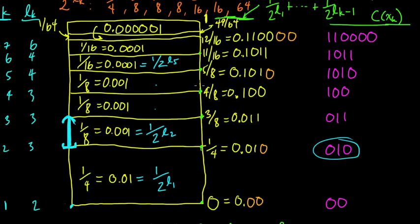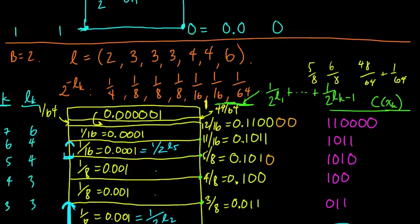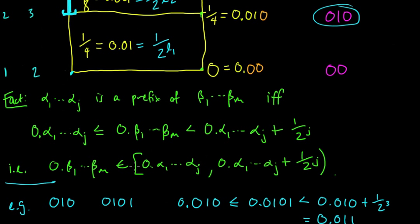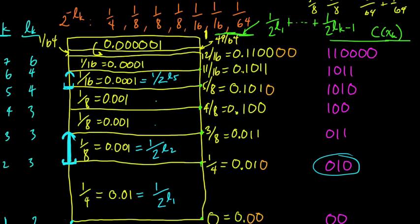is equal to, so I want to figure out what this interval is. So I need to take that number, and I need to add 1 over 2 to the J. And what is J in this case? Well, J is the length. So we're at this guy here. J would be 4 in this case, because we have 4 symbols in our string.